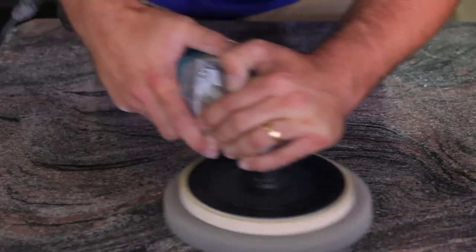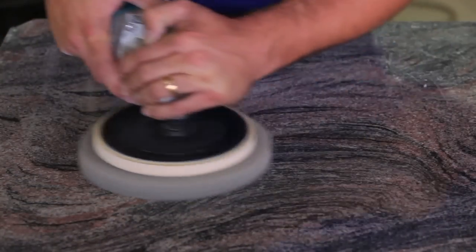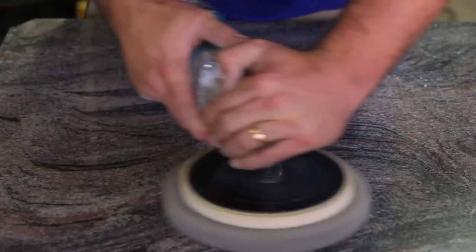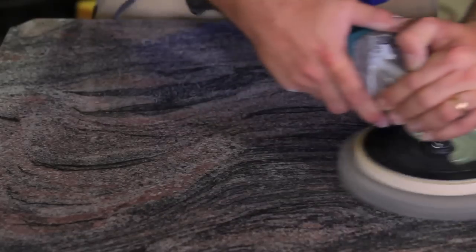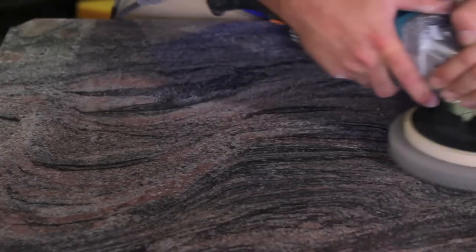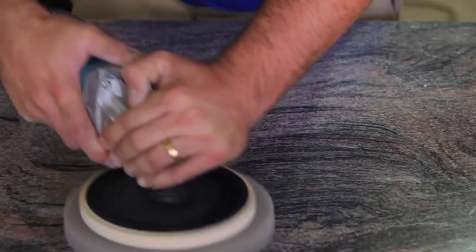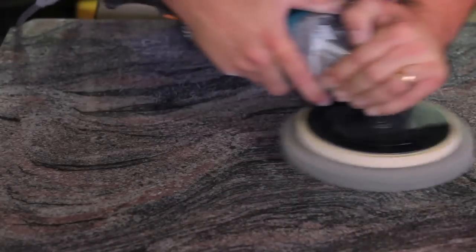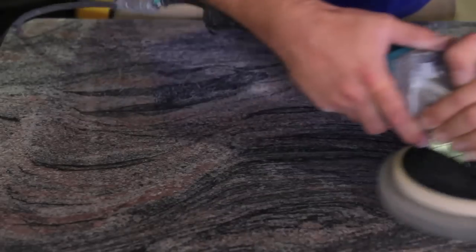You should see a shine starting to form during this process. If you need to you may add additional pressure although a lot of pressure is not needed like it is when you are using diamonds. Continue to move the machine across the surface and burnish the product completely from the surface. When it is all gone you may release the pressure and just go over the area to buff it to make sure that it is clean.